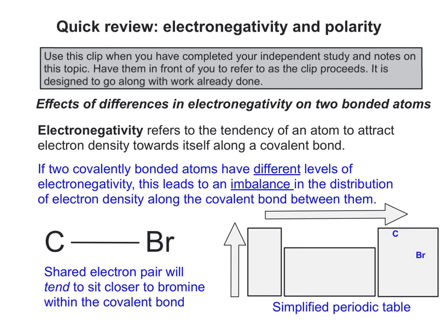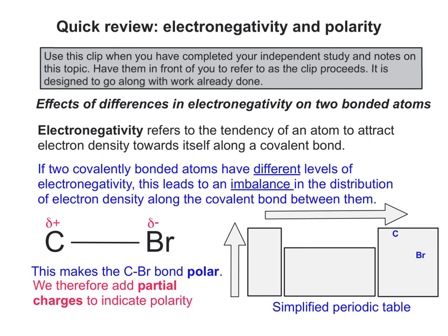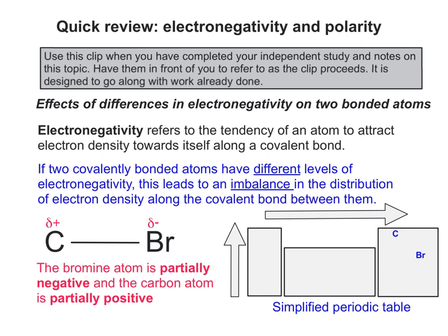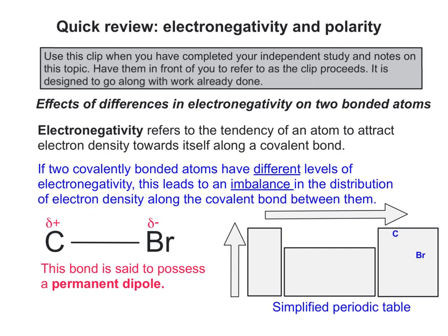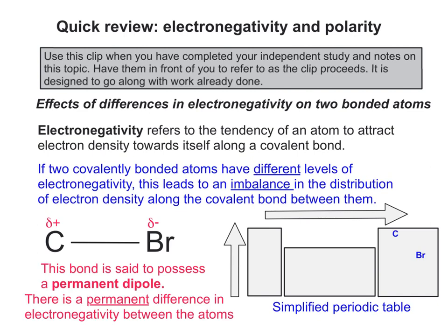This effect is called polarity. We add partial charges to indicate polarity, referring to the bromine atom as partially negative and the carbon atom as partially positive. We use the symbols δ+ and δ− to indicate this. This bond is also said to possess a permanent dipole, because there is a permanent difference in electronegativity between the atoms.